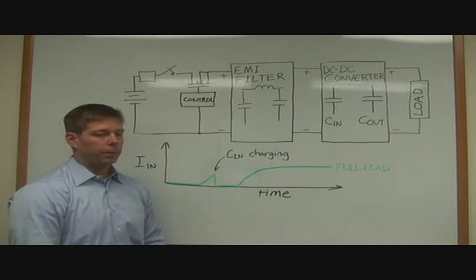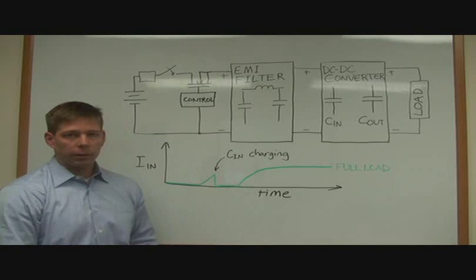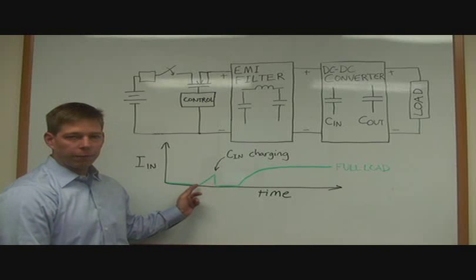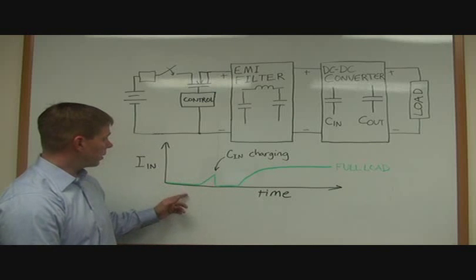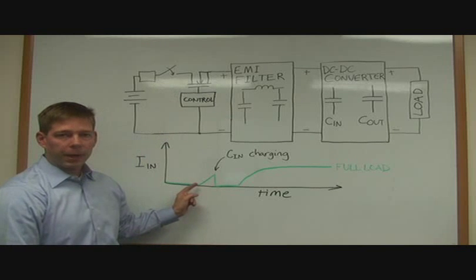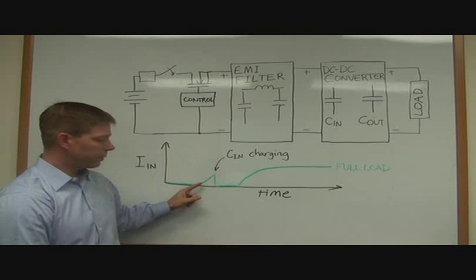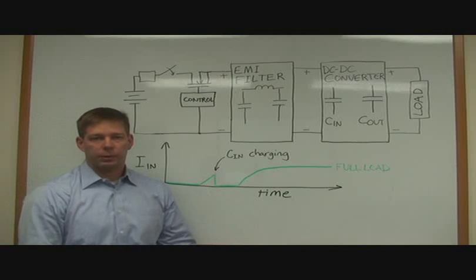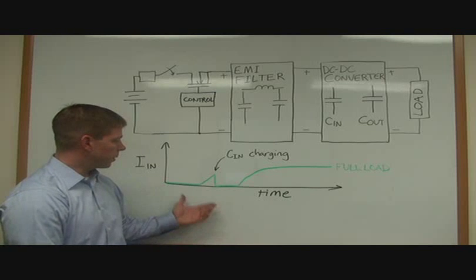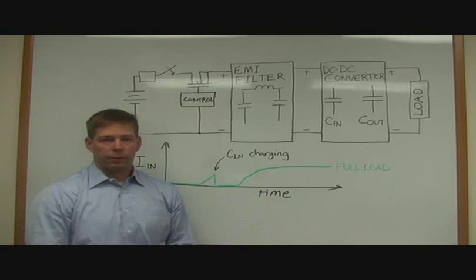With the inrush current limiting circuit implemented or with one of our products that control inrush current, your input current waveform is going to look like this. When the input switch is shut, the input capacitor charging waveform is going to be greatly reduced, and the DIDT of that waveform is going to be much lower. That will improve EMI performance, and also the peak of that current never exceeds the full load running current of the converter.